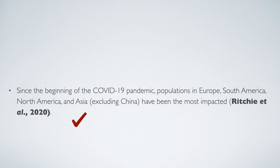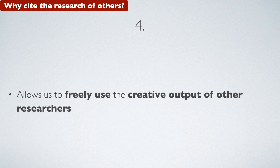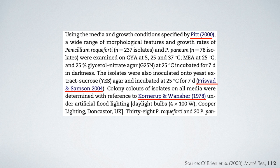Number four, we cite the research of others because it allows us to freely use the creative output of other researchers. Here is an example where I use the research of other researchers in my own research. It's perfectly fine to do that as long as you cite the sources you use.